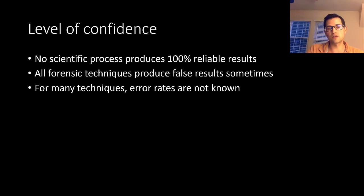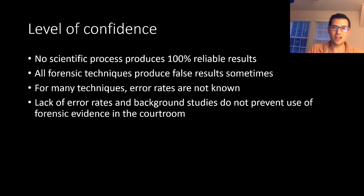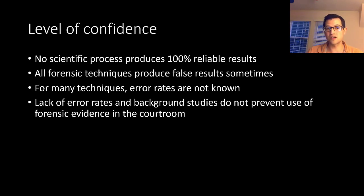I think you can see the importance of this in the legal context. A false positive might result in a person going to jail or even being executed for a crime they did not commit, whereas a false negative might result in a person who committed a terrible crime being released and going on to commit further crimes. For many forensic techniques in use today, the error rates are not known — we don't know whether a technique fails one in every 10 times, one in every hundred, or one in every thousand. However, this lack of known error rates does not prevent the use of forensic evidence in the courtroom. The only thing that determines that is the judgment of the judge.